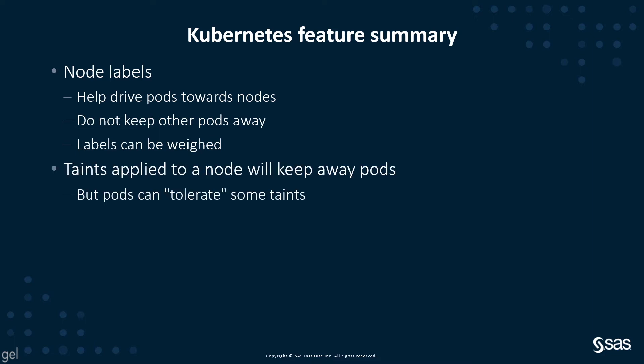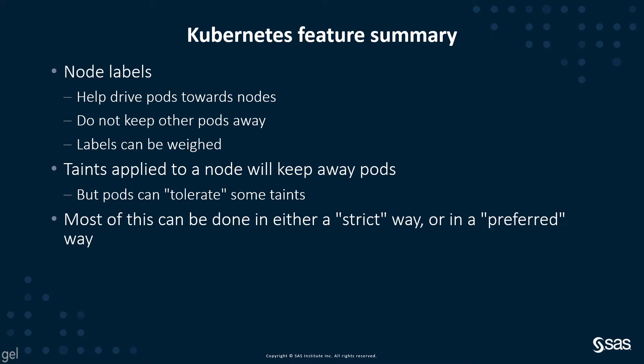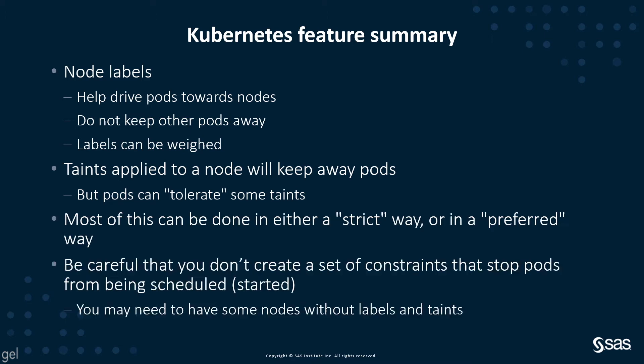Taints are applied to nodes to keep pods away, but pods can be set up to tolerate some taints. This is what we were seeing in the first video when we saw that topology where we had node pools or nodes dedicated to the various classes of SAS application pods. Most of this can be done in either a strict way or a preferred way, but we need to be careful that we don't create constraints that stop pods from being scheduled. You need to have some nodes without any labels and taints.